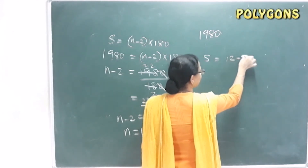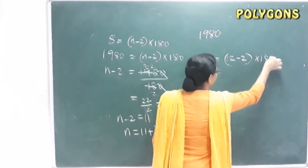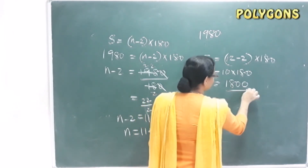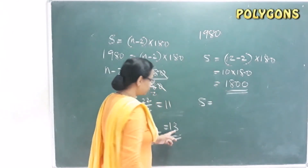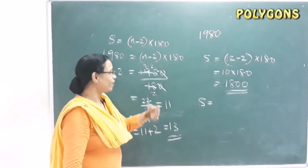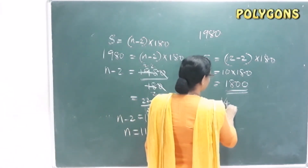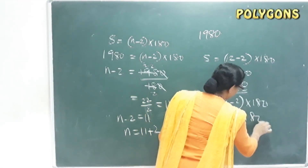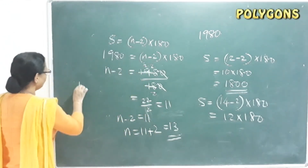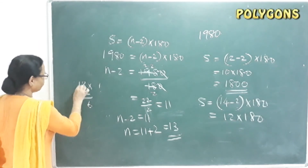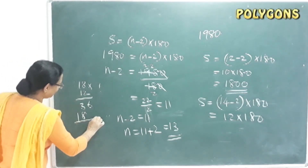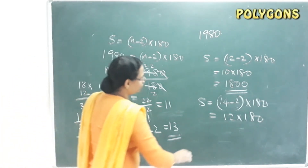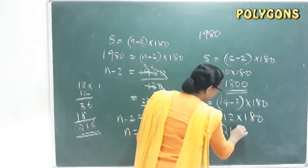For 12 sides: 10 × 180 = 1800 degrees. For one side more: N = 14, sum = (14 − 2) × 180 = 12 × 180 = 2160 degrees.